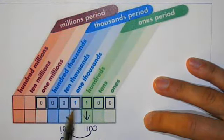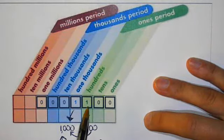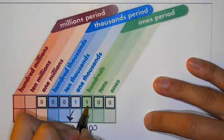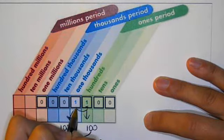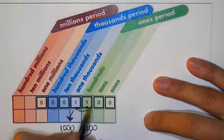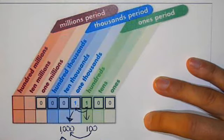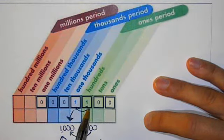This is the same digit, both of these are ones. I am moving from the hundreds place one spot to the left, and that would be the 1000s place. So 100 times 10 equals 1000.